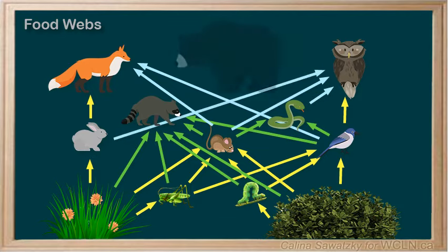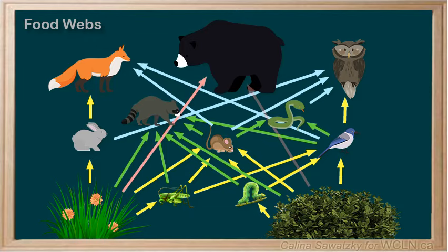What about a black bear? He's the biggest animal in many Canadian forests. The bear is typically happy to eat grass, berries, and various insects. They'll eat other animals, but typically only if they're already dead.